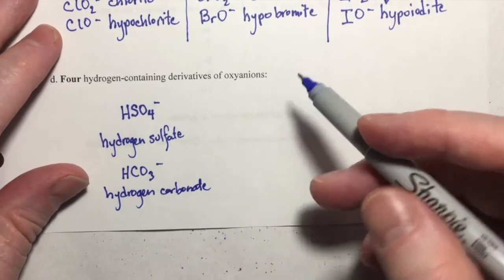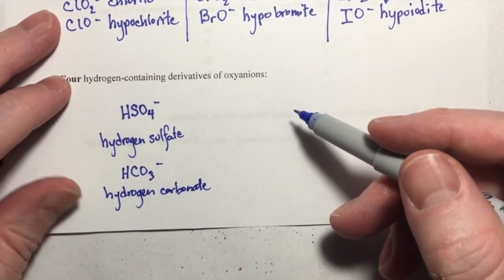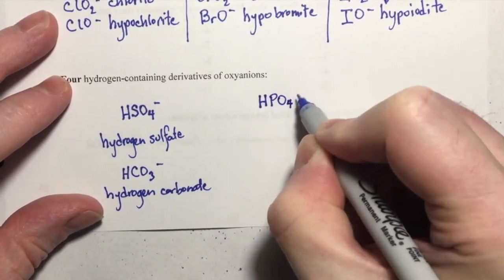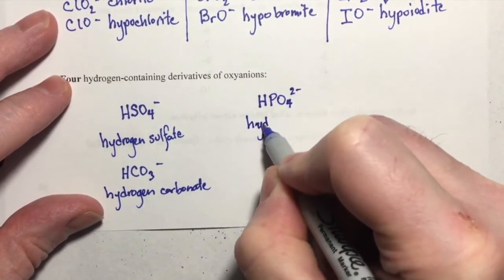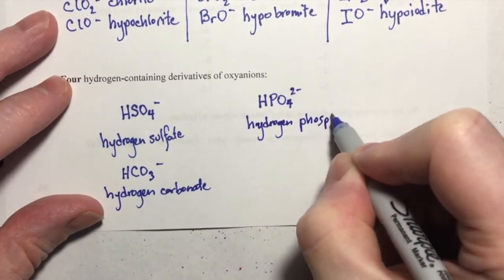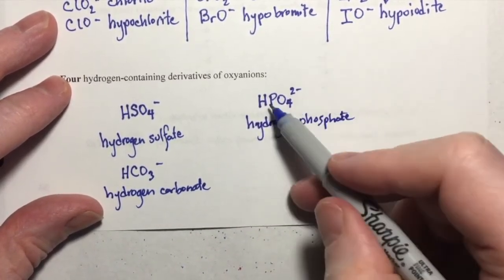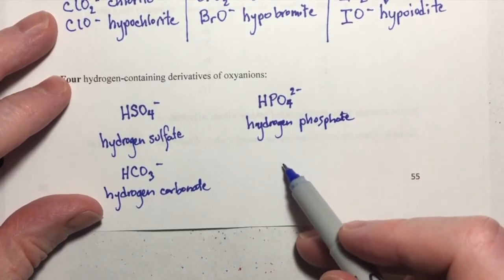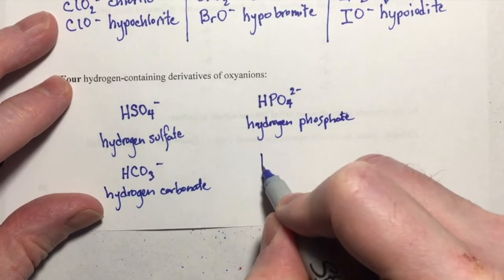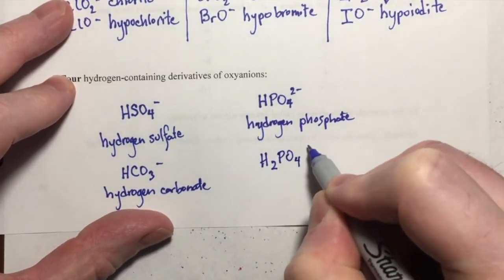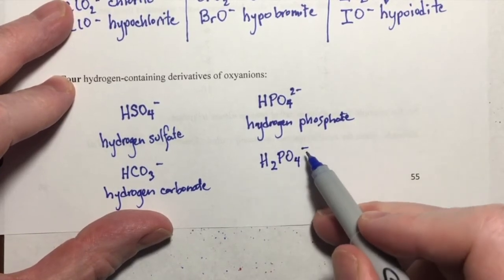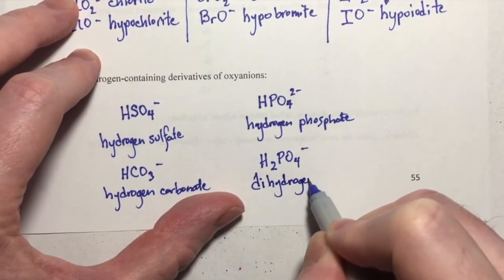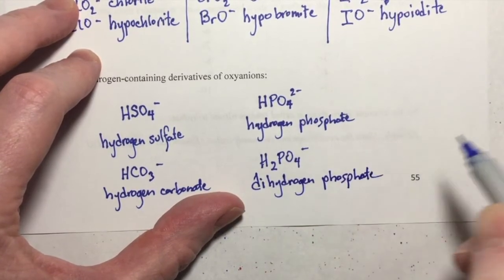And the other two oxyanion derivatives are derivatives of the phosphate ion. So we have the one that has a single hydrogen in it - HPO4 with a two minus charge, hydrogen phosphate. And we have the derivative of phosphate that has two hydrogens in it - H2PO4 minus, and this is called dihydrogen phosphate.